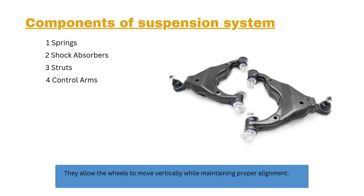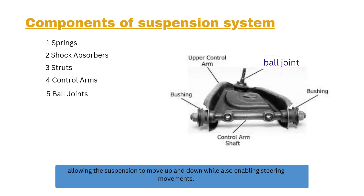Number four: control arms. These are pivoted links that connect the wheel hub to the vehicle's frame or body, allowing the wheels to move vertically while maintaining proper alignment. Number five: ball joints. Ball joints are used to connect the control arms to the steering knuckles, allowing the suspension to move up and down while also enabling steering movements.